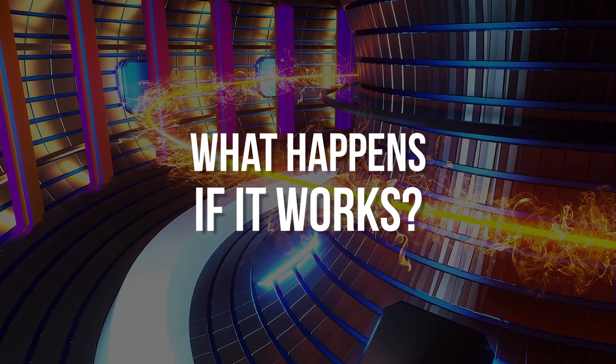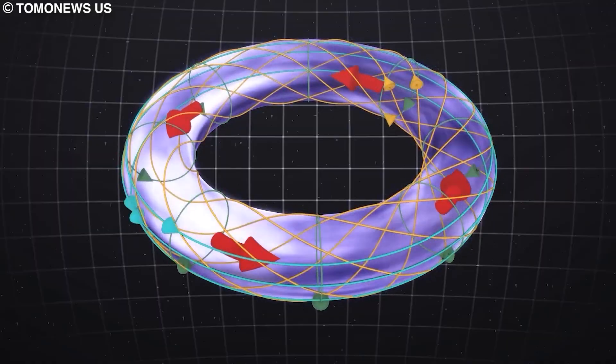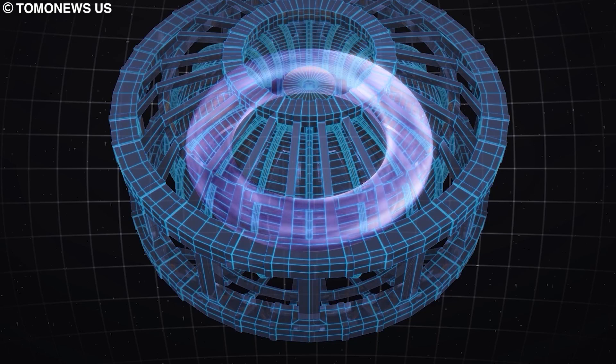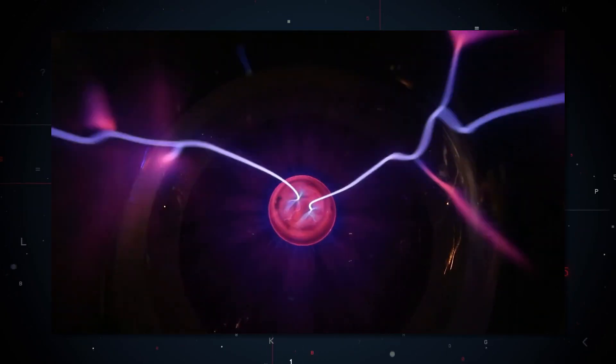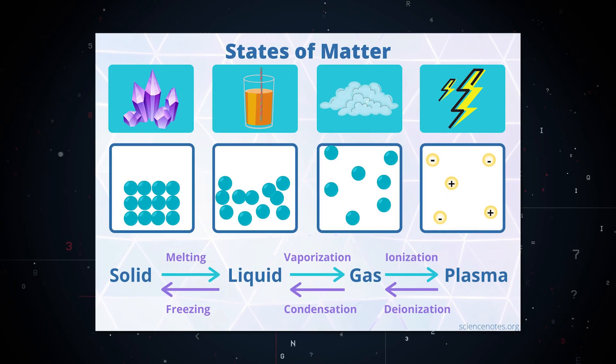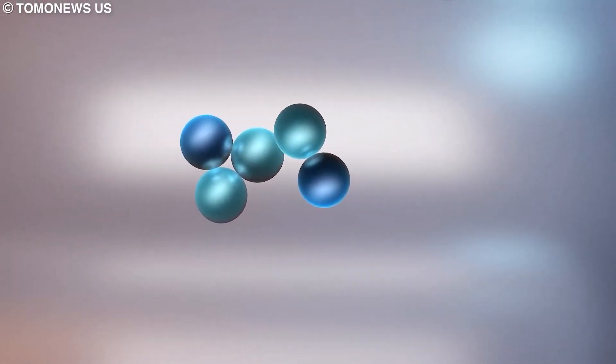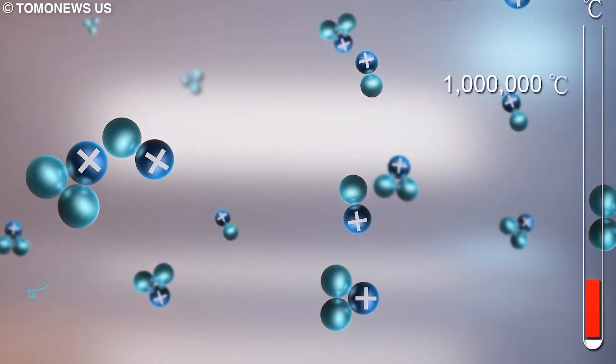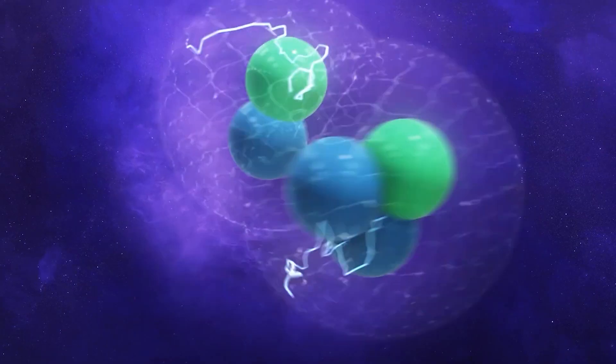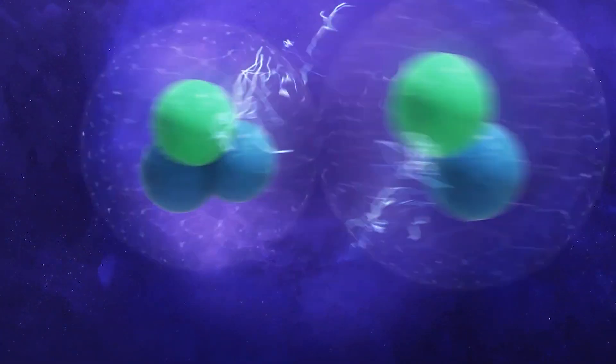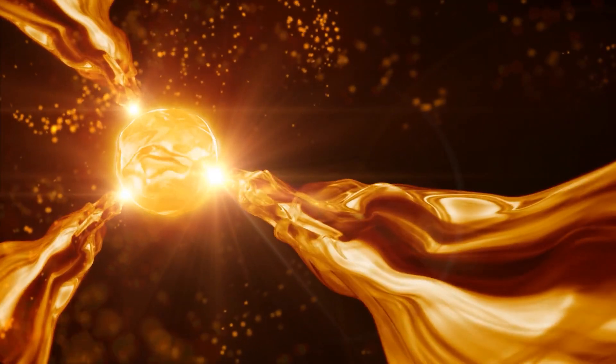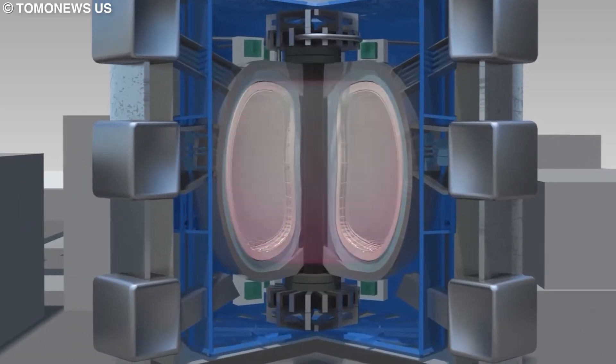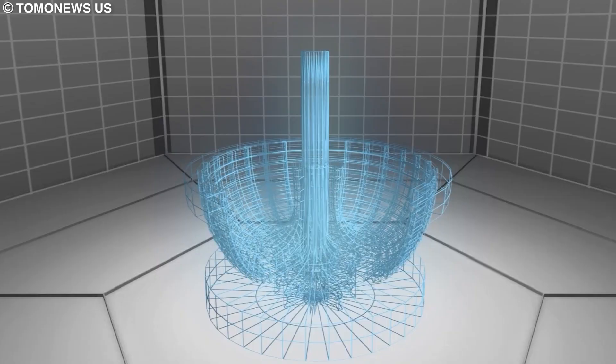So what happens if it works? If the ITER experiment is successful, there are two expected results. First is the creation of burning plasma, which is one of the four fundamental states of matter, along with solid, liquid, and gas. During the experiments, if the energy of the helium nuclei produced when hydrogen isotopes are fused becomes large enough to sustain and propagate the burn without the need for external heat sources, then ITER scientists would have created burning plasma. This is the first step towards a self-sustaining nuclear fusion reaction.